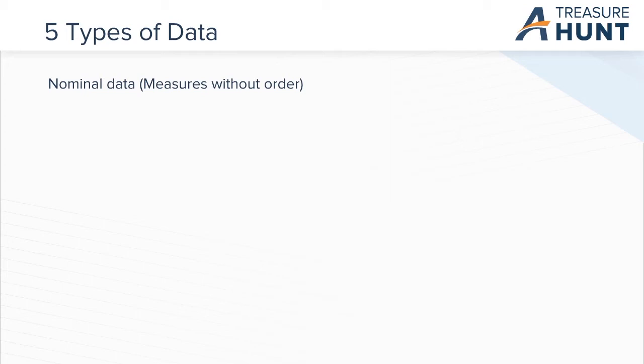It simply indicates that two or more classifications are different. For example, type of school is an example of nominal data, because it could either be vocational, private, or state.